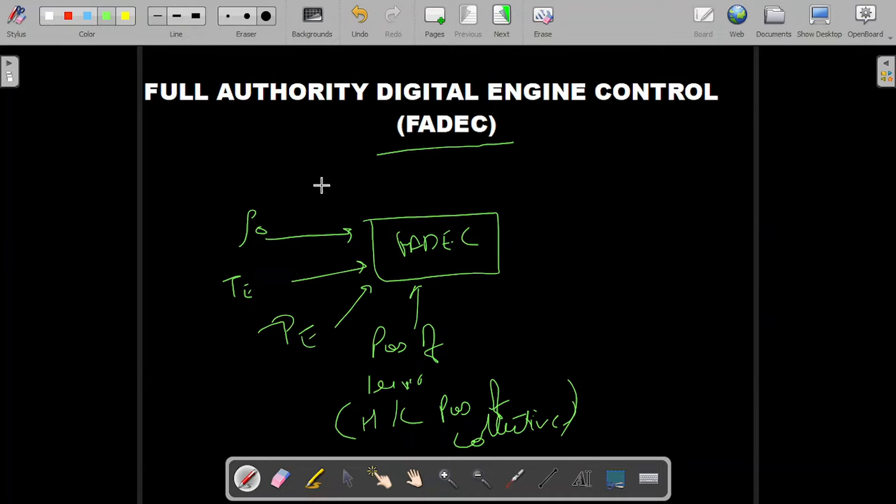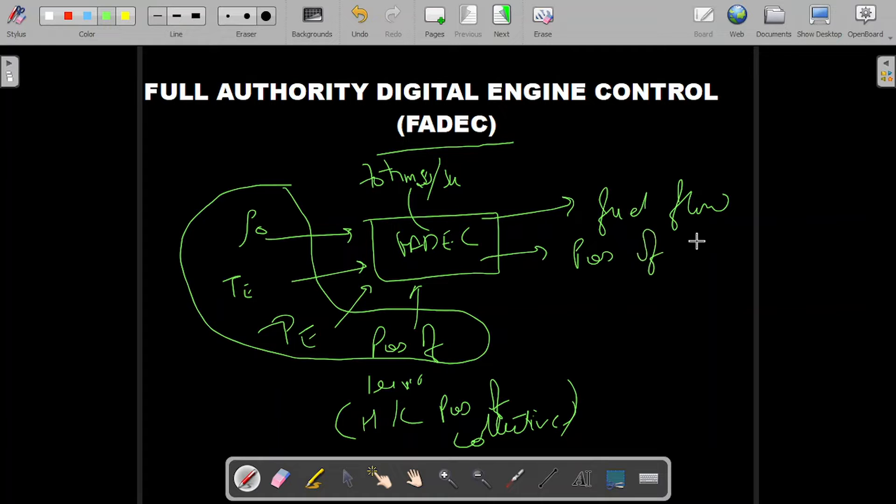It ensures all the important parameters, receives them, and computation happens inside. It's an electronic circuitry with rates around 70 times per second. Post computation, it checks the fuel flow and the position of stator valve. Stator valves are fitted inside the engine in the compressor and turbine stages, which regulate or direct the flow of air through them.